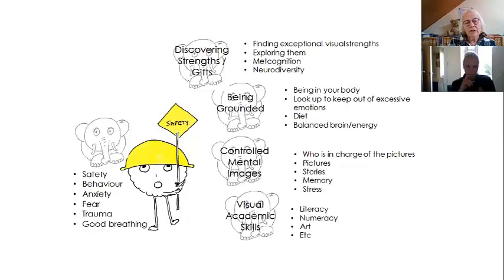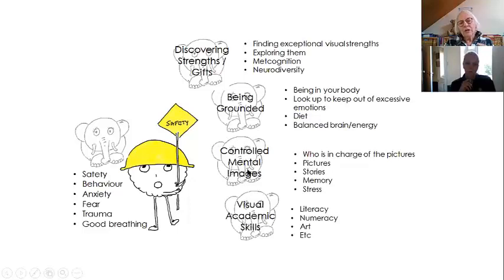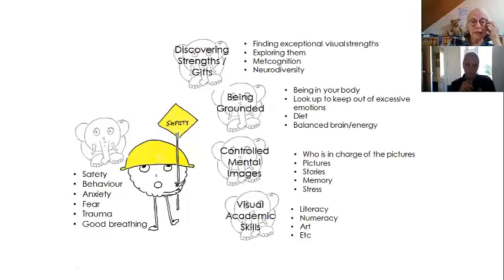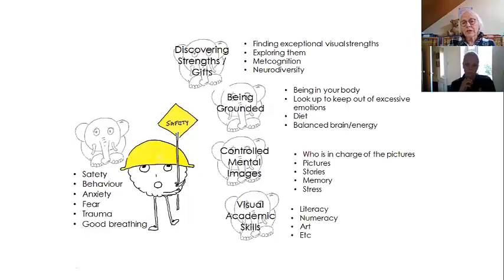For different neurodivergent diagnoses, you'll find a different balance between these things. For example, dyslexics are sometimes not grounded but they're not normally traumatized. They've probably got good mental images, but no words in their mental images, so they can't use them for something really fundamental. Whereas an ADHD person may have fantastic literacy but completely out-of-control mental imagery. At the same time, they're really clever because they can see connections between lots of different mental images — putting jigsaw puzzles together in their head at great speed.